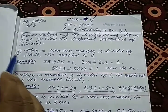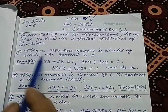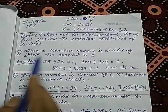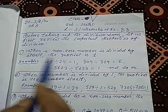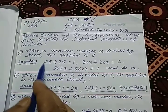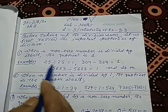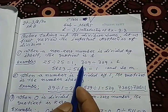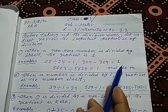First property: when a non-zero number is divided by itself, the quotient is 1. That means if you divide a number by the same number, you will get the quotient 1. For example, 25 divided by 25, your quotient will be 1. 309 divided by 309, you will get quotient 1.